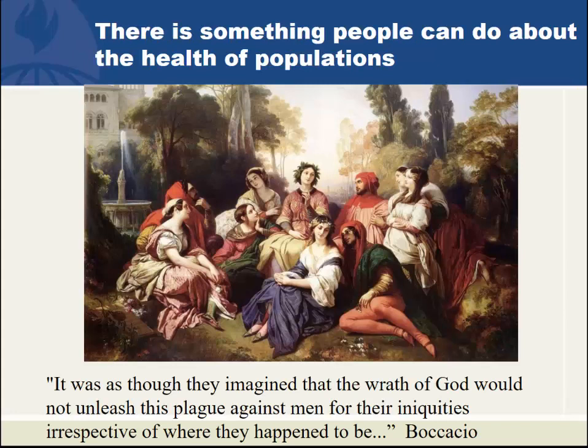Going back to the assumption that there's something people can do about the health of populations — that's actually a new idea. Here is a picture of the participants in Boccaccio's Decameron, sitting in their villa worried about the plague ravaging the townspeople below. They thought there was nothing they could do. Boccaccio writes that they imagined the wrath of God would unleash this plague against men for their iniquities, irrespective of where they happened to be. So in subsequent chapters, they just sat around telling stories because they felt there was nothing to do to avoid getting plague. None of you would approach plague that way — you would run for a vaccine, stock up on penicillin, and cover your mouth and nose.